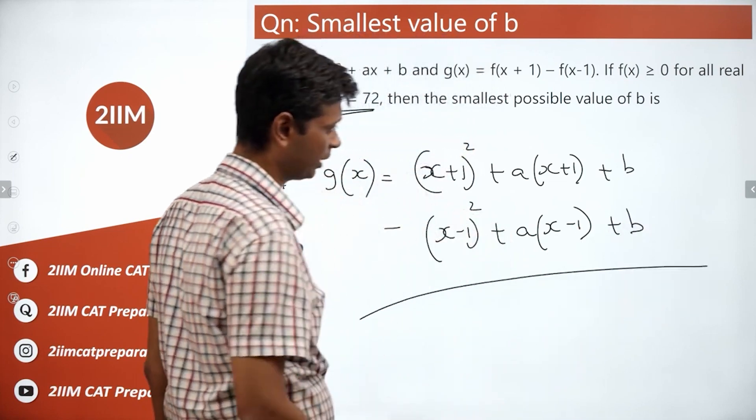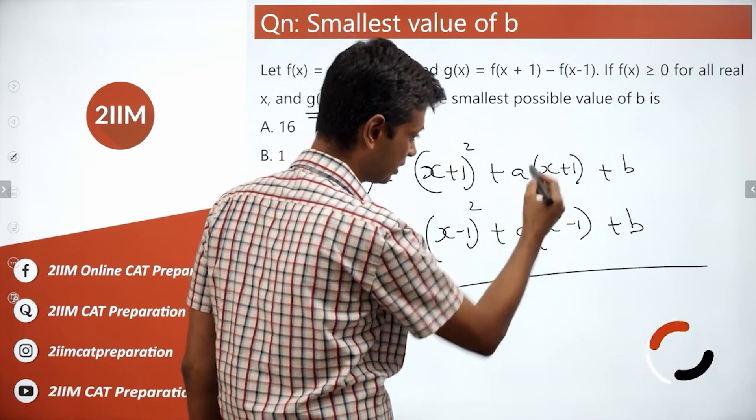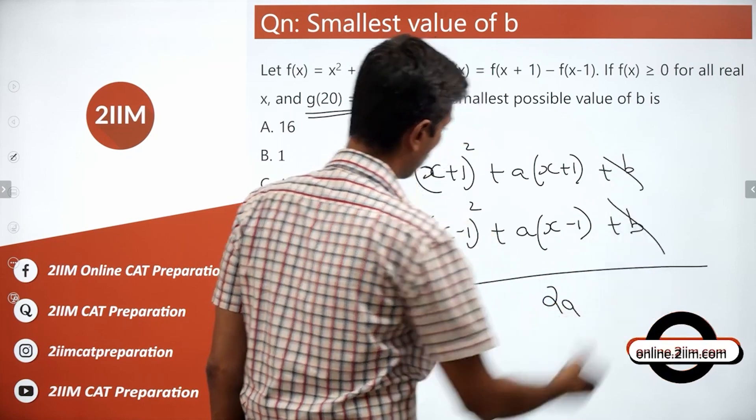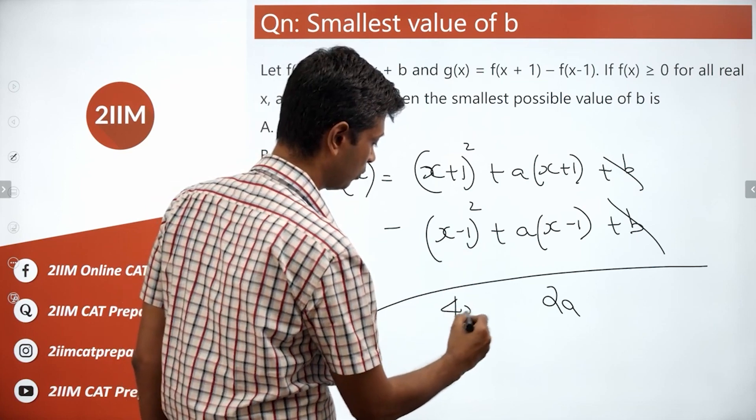We subtract one from the other. The ax terms get cancelled. Plus a minus a when subtracted gives 2a. Plus b minus b goes off. x² + 2x + 1 minus x² - 2x + 1 gives 4x.